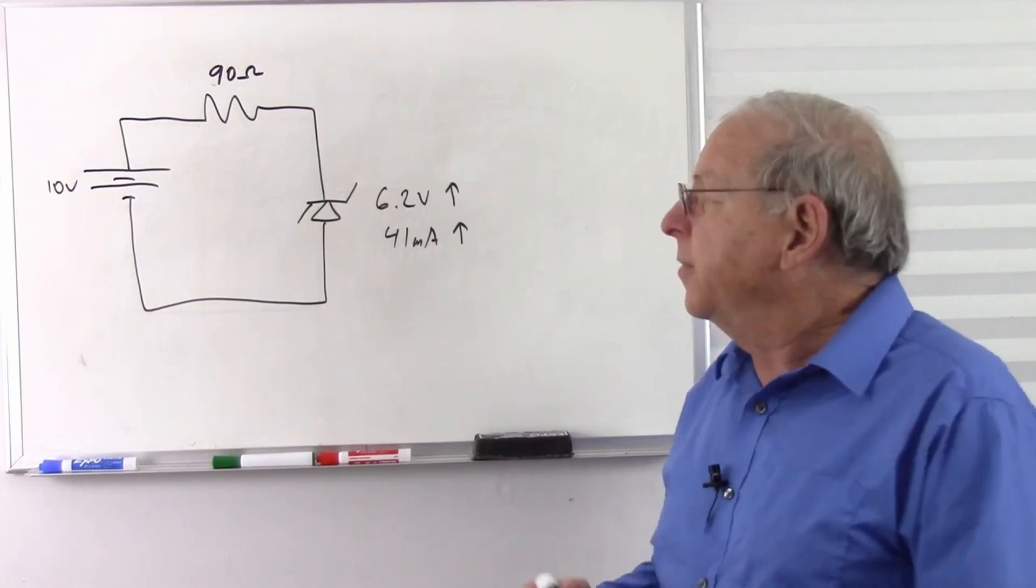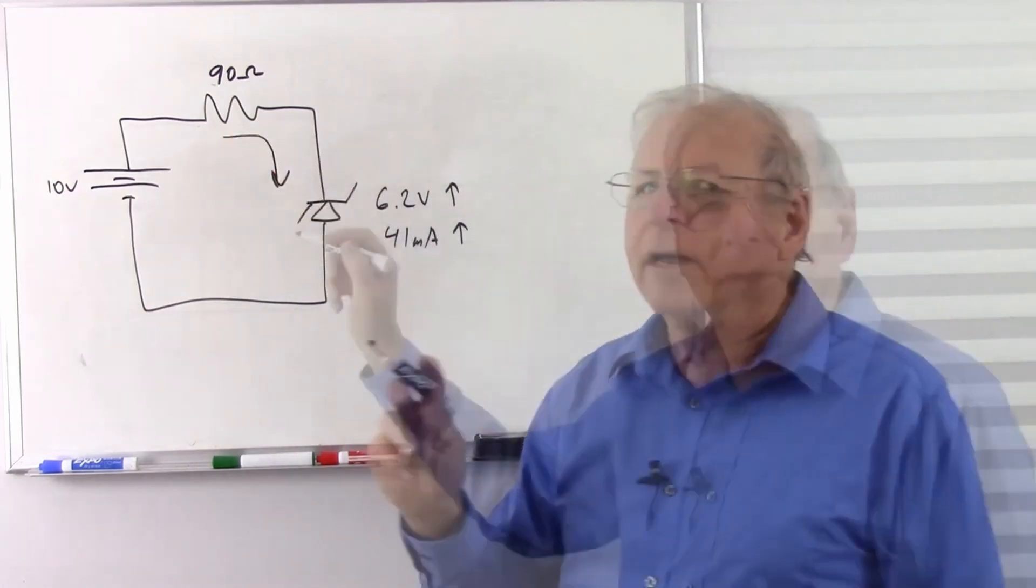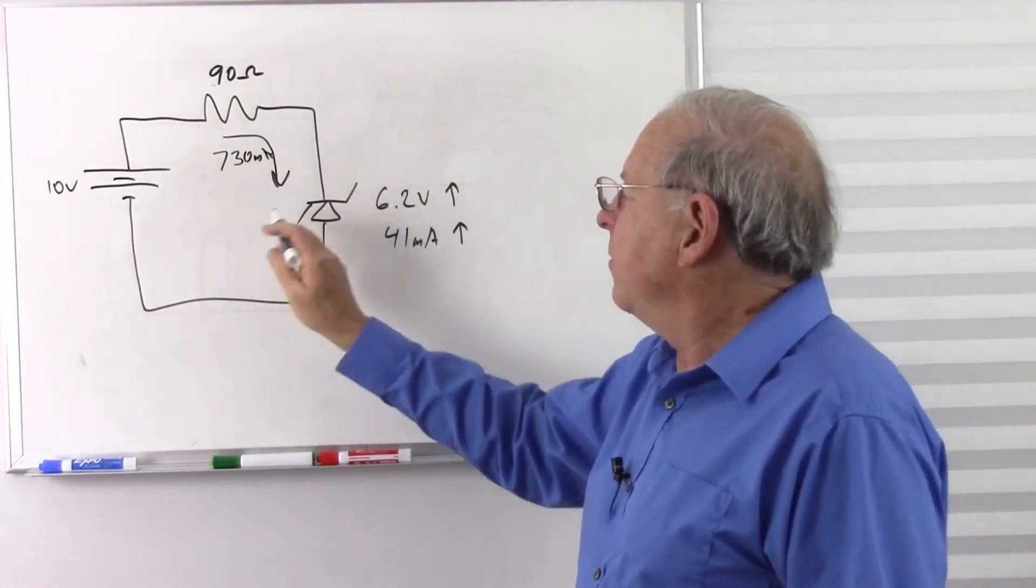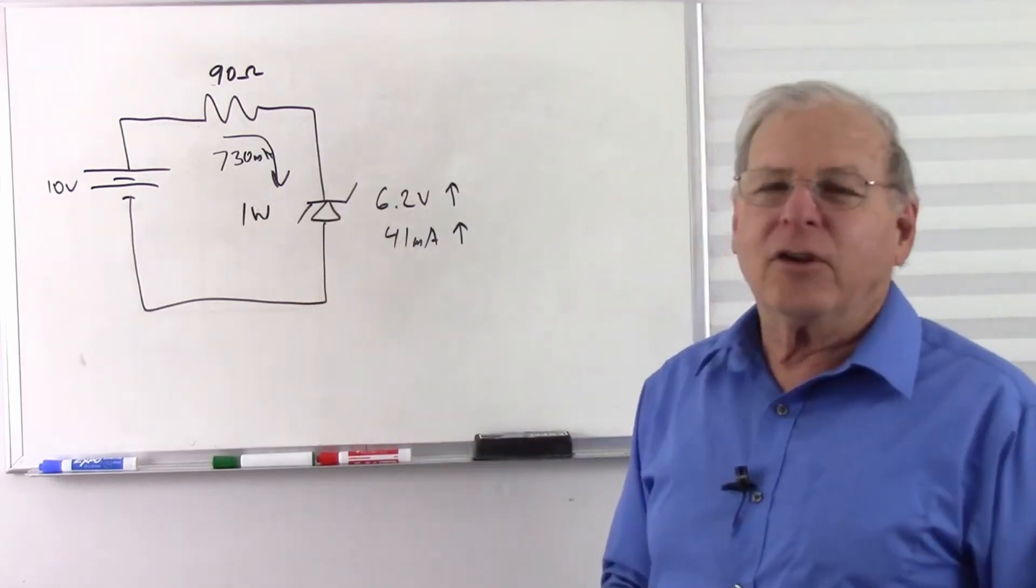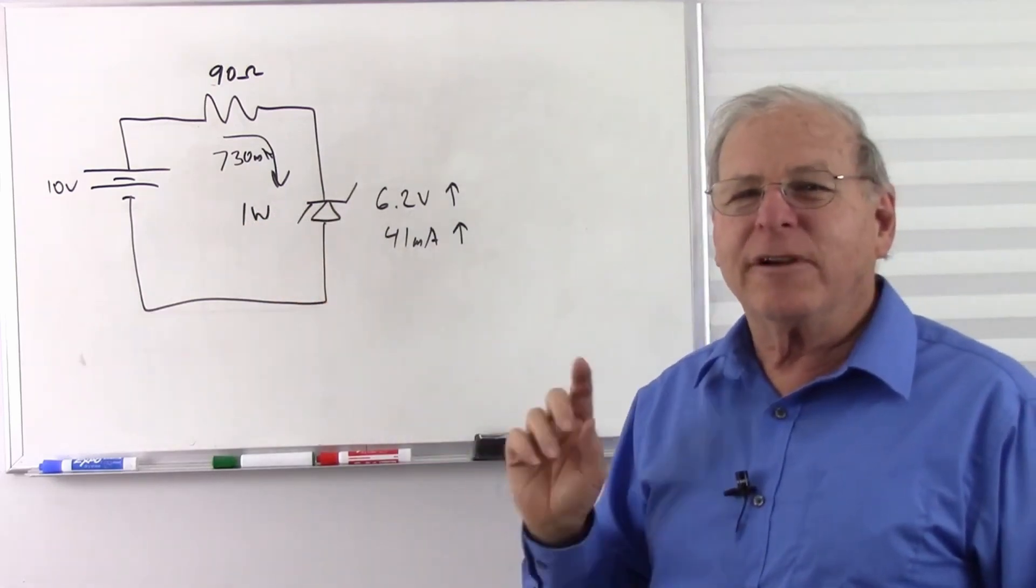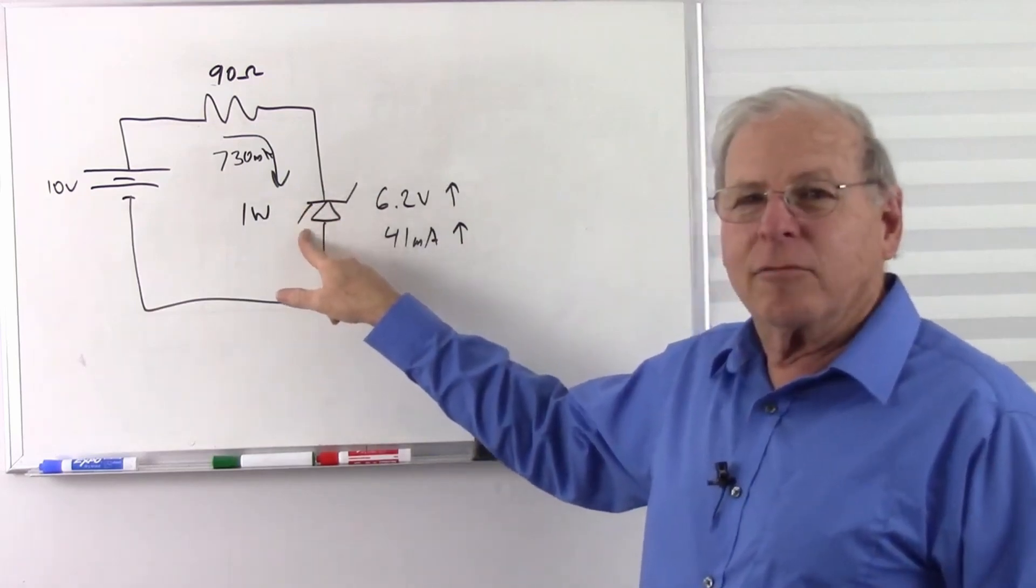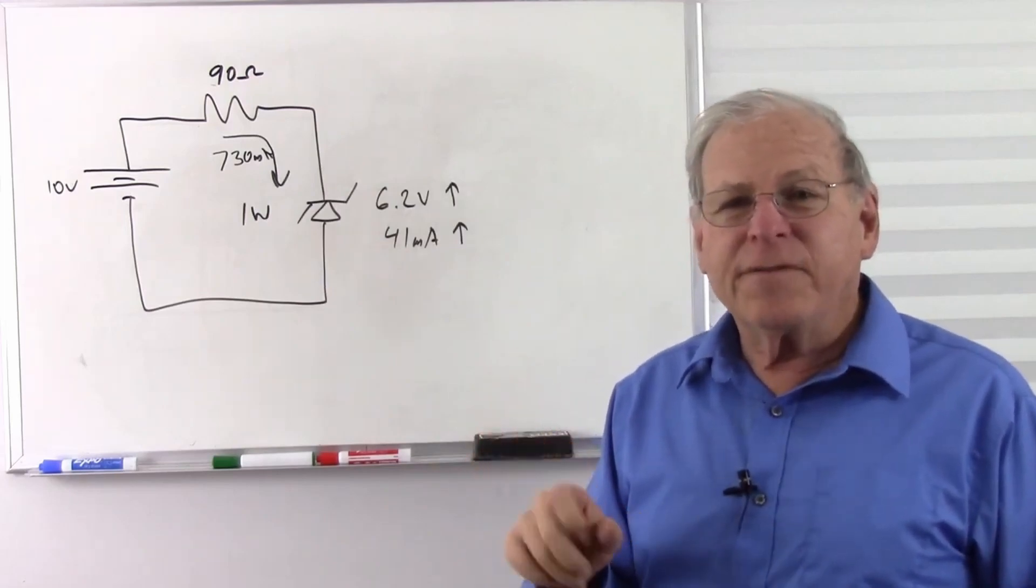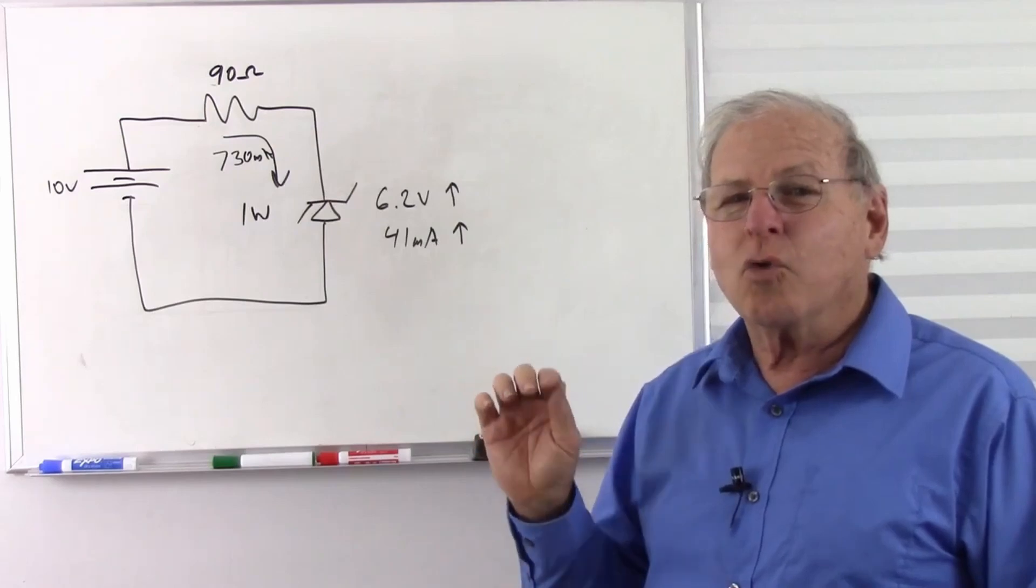But there's another reason. If we design this around the maximum current, which was 730 milliamps, that's going to be operating this right at its maximum one watt. It can do that indefinitely without being damaged. But you're going to find something very interesting if you run these diodes at their maximum power dissipation. They're going to get warm. Maybe not enough to feel, but they are going to get warm. And every little air current is going to cool them off a little bit.